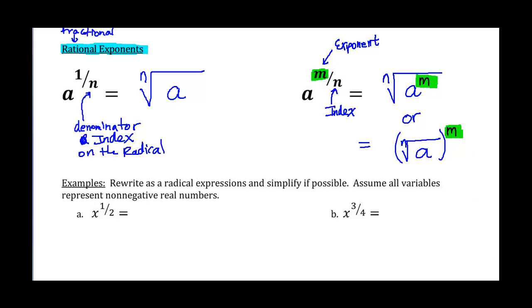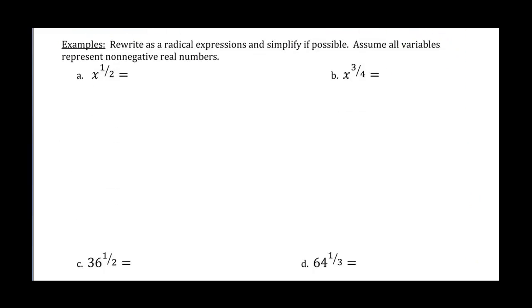Let's look at some examples. It says rewrite as a radical expression and simplify if possible. All variables represent non-negative real numbers. In this first example, I have x to the 1 over 2. Notice, 2 is my index. So this is going to be the same thing as saying the square root of x. I just want you to get used to going from a fractional exponent expression to a radical expression.